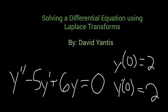Today I'm going to be talking about how to solve a differential equation using Laplace transforms. The equation for today is y double prime minus 5y prime plus 6y equals 0 with initial conditions of y of 0 equals 2 and y prime of 0 equals 2.